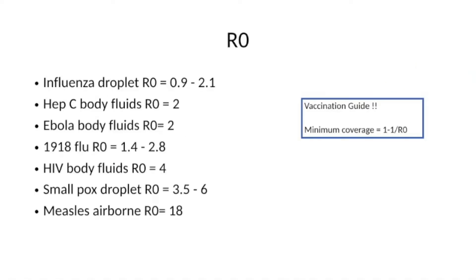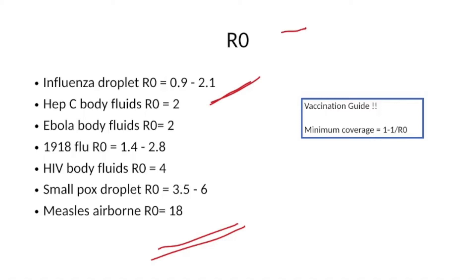Here are a few examples. The R0 of influenza via droplet infection is found to be 0.9 to 2.1. A single case can produce up to 18 active cases when in contact with a susceptible population. R0 directly implies the infectiousness of the disease.